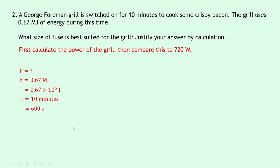So writing down our equation, we have P = E/T. Substituting in the numbers now, we get 0.67 × 10⁶ / 600. And putting this into your calculator gives a final answer of 1.12 × 10³ watts, or in other words, 1120 watts.